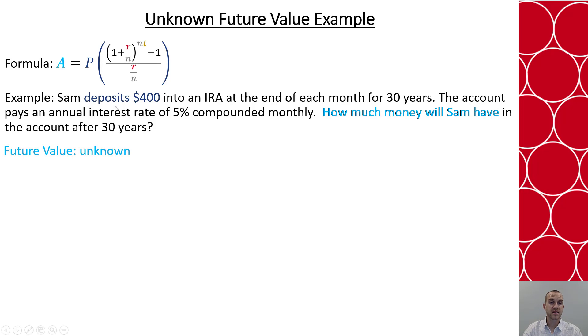Then we see that Sam is depositing $400 each month, so $400 is that periodic payment. There's an amount going into the annuity every month. It's at an interest rate of 5%, and it's being told that it's happening over 30 years. So this is like trying to build a retirement account.